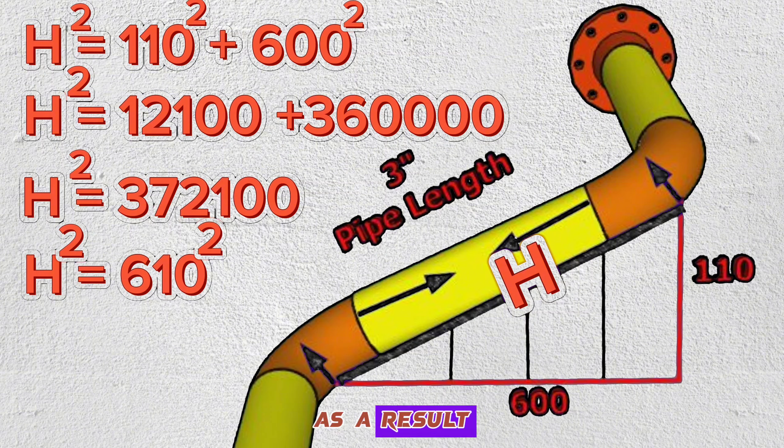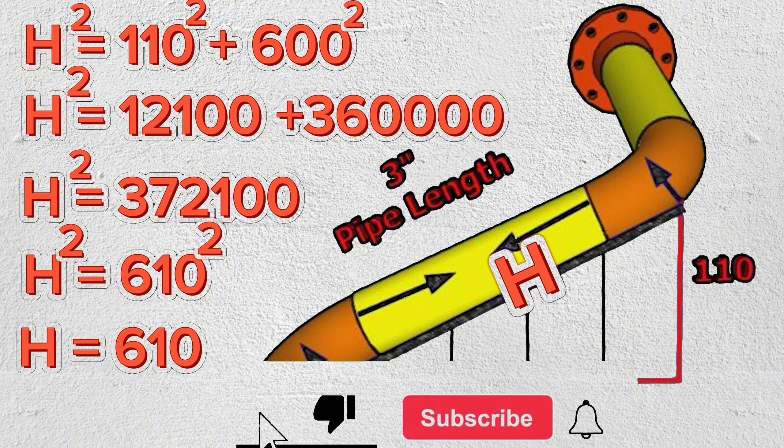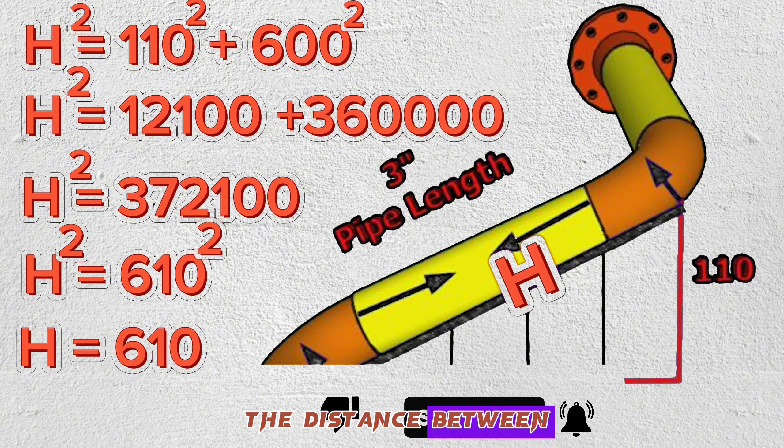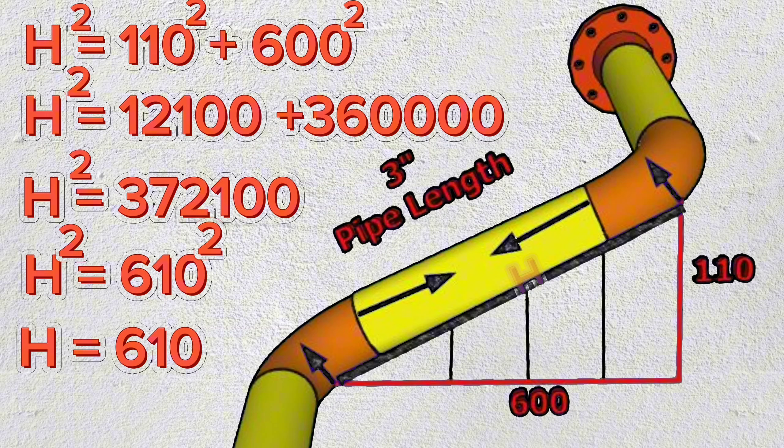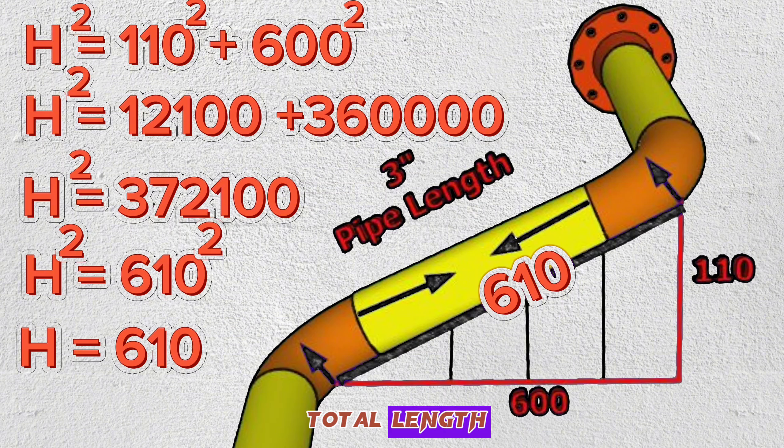As a result, the length of the hypotenuse of the triangle, H, is equal to 610 millimeters. 610 millimeters is also the distance between the two elbows. Now let's calculate the length of the yellow pipe we need by subtracting the lengths of the two elbows from this total length.